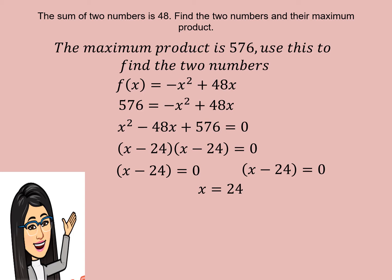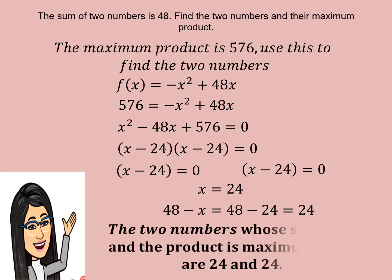This serves as our first number. Then 48 minus X, so 48 minus 24 — the other number is also 24. So for our conclusion, the two numbers whose sum is 48 and whose product is maximum are 24 and 24.